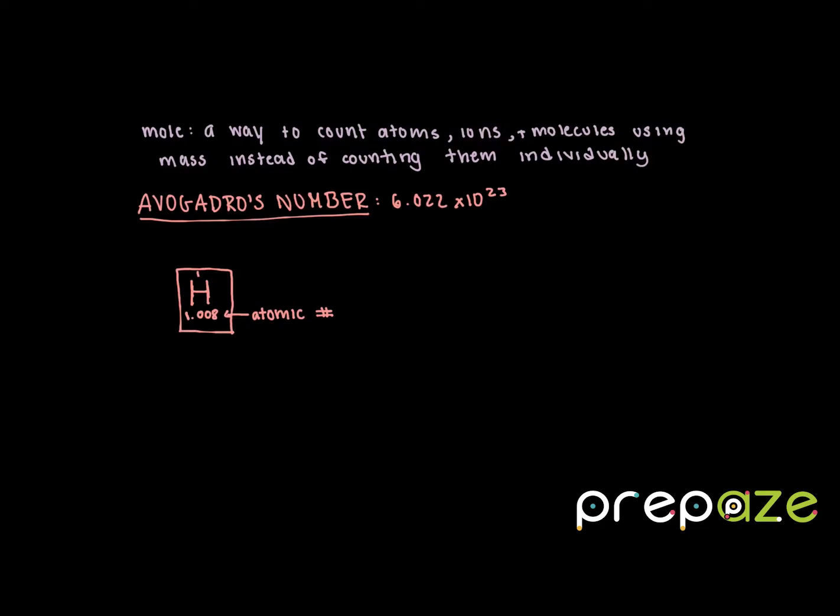Well, all a mole is is a different way to count atoms, ions, and molecules by mass instead of counting them individually. And this is because atoms, ions, and molecules are all so incredibly small that if we were to actually count each and every one of them, that number would be ginormous. So instead of counting individually, we're counting using mass or more specifically grams.